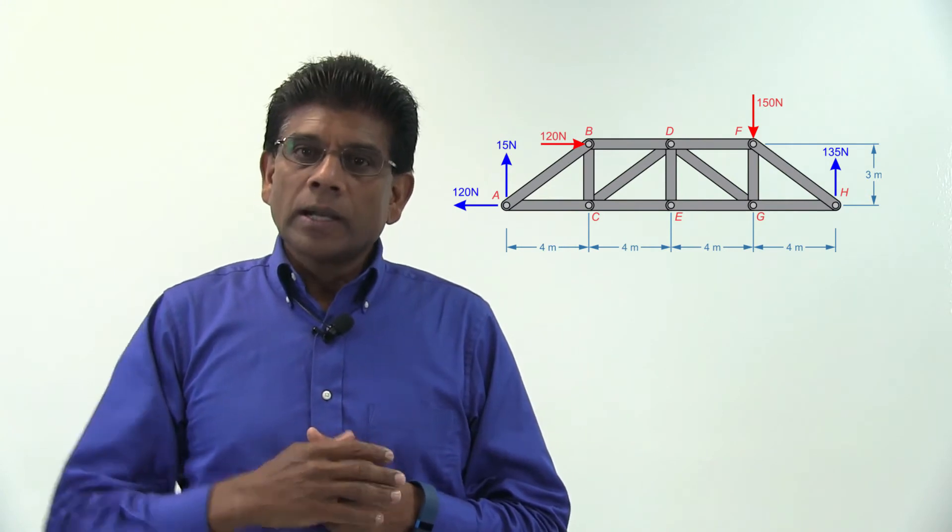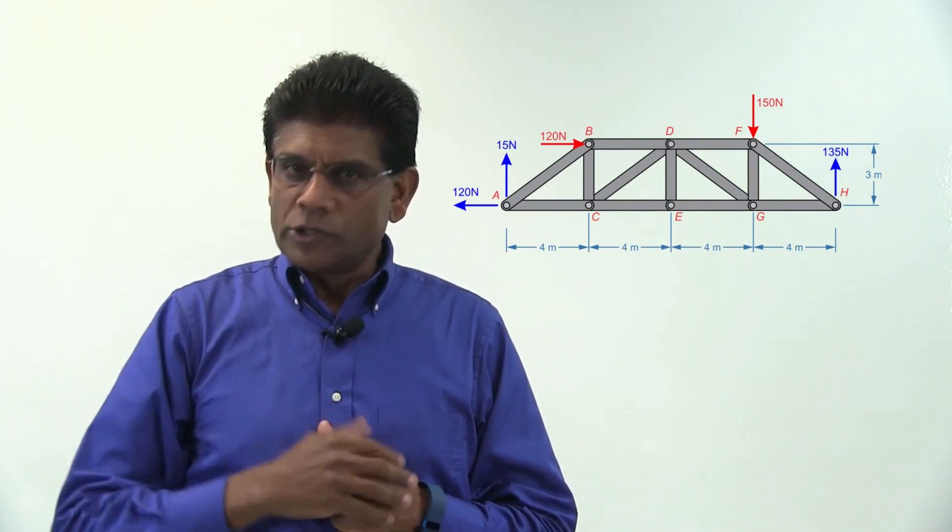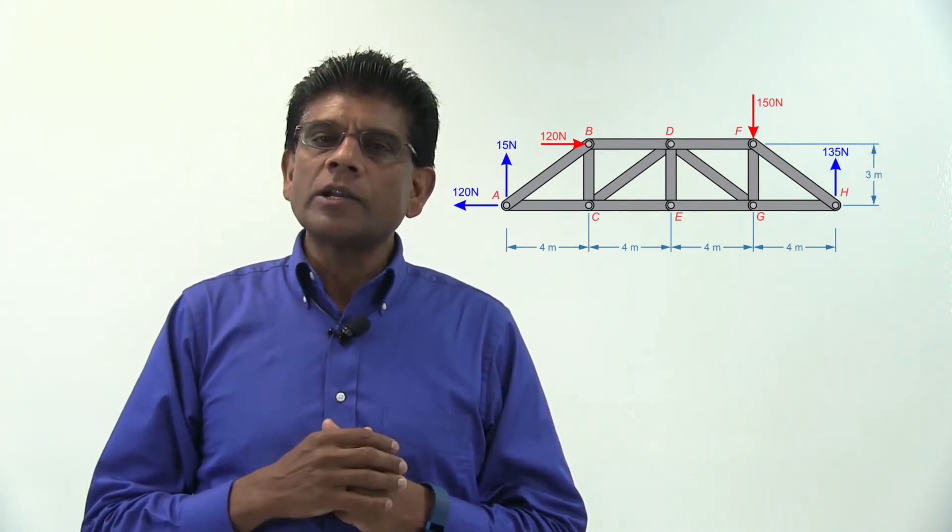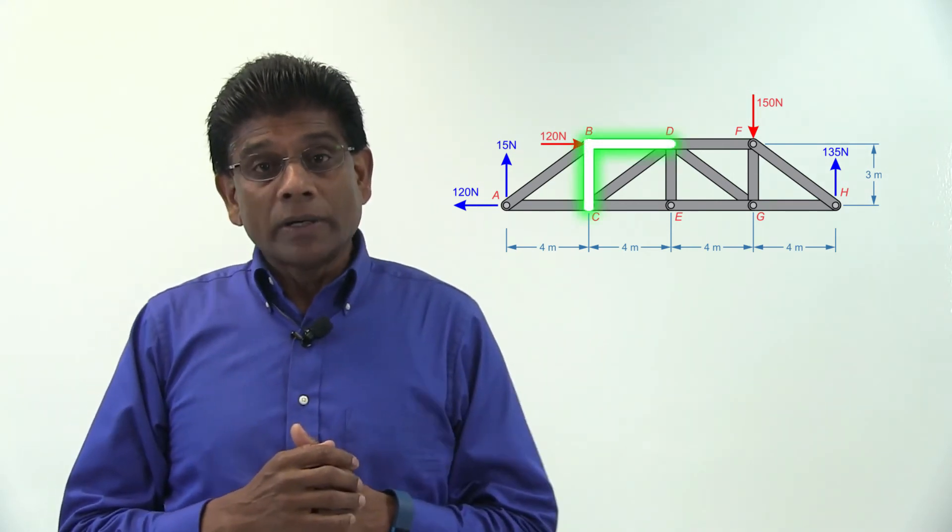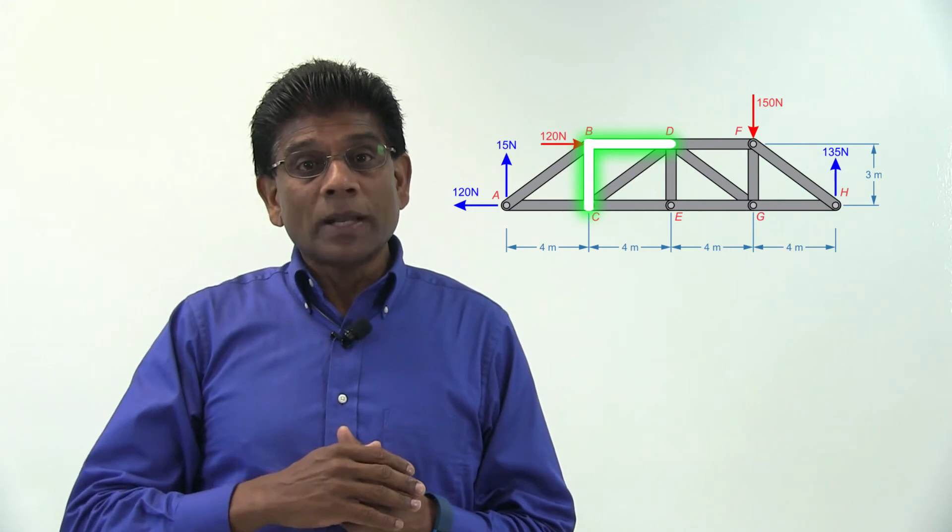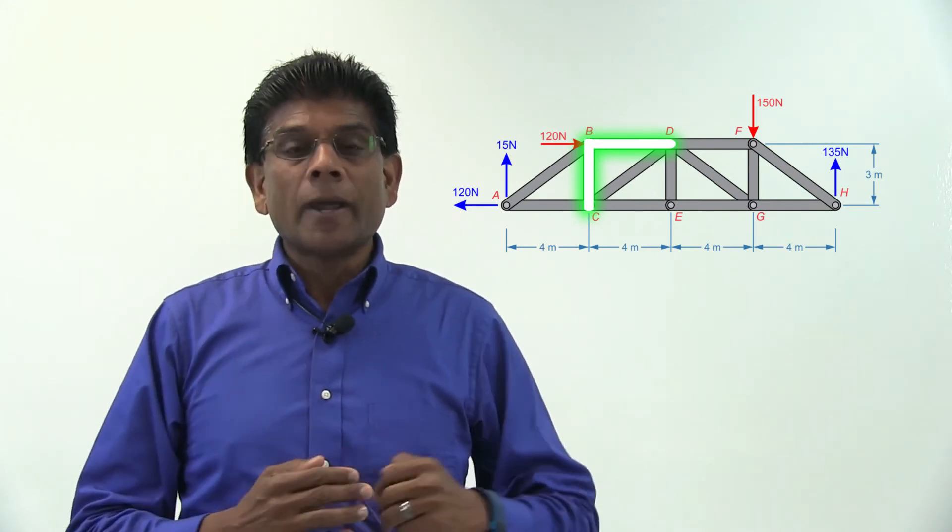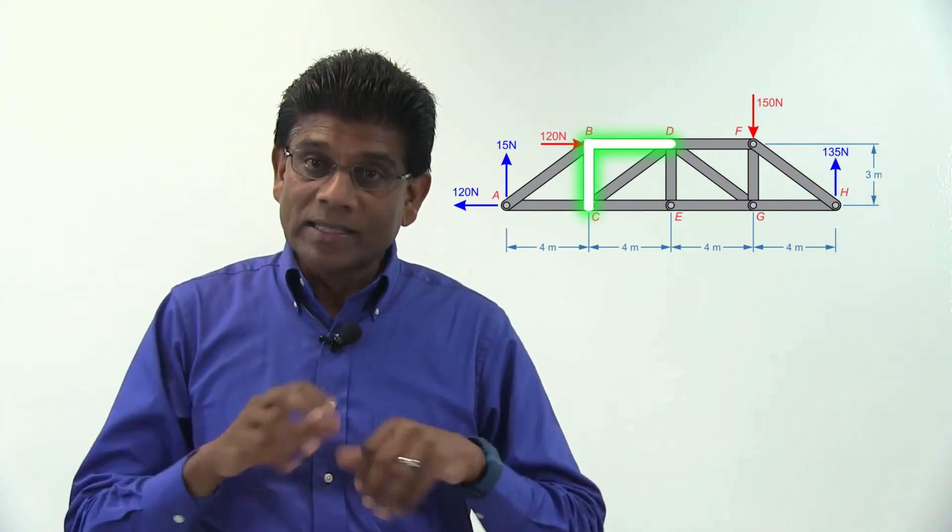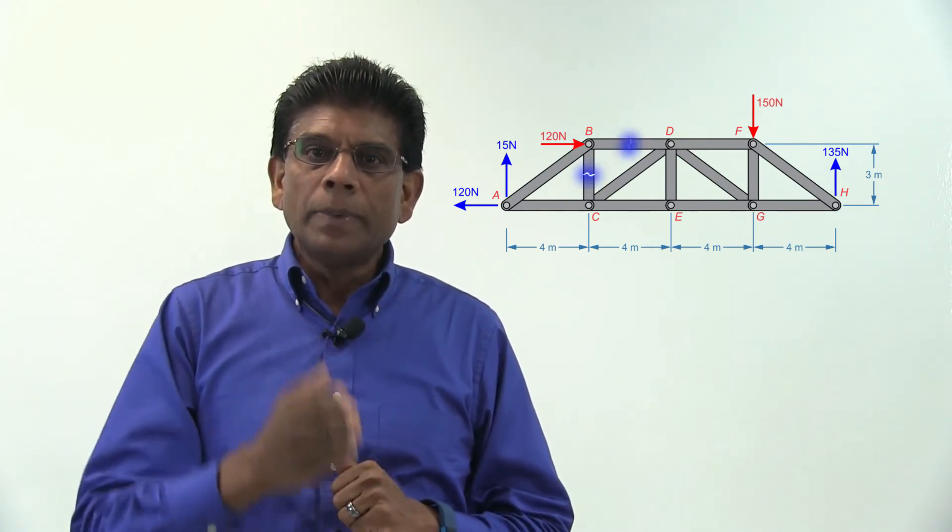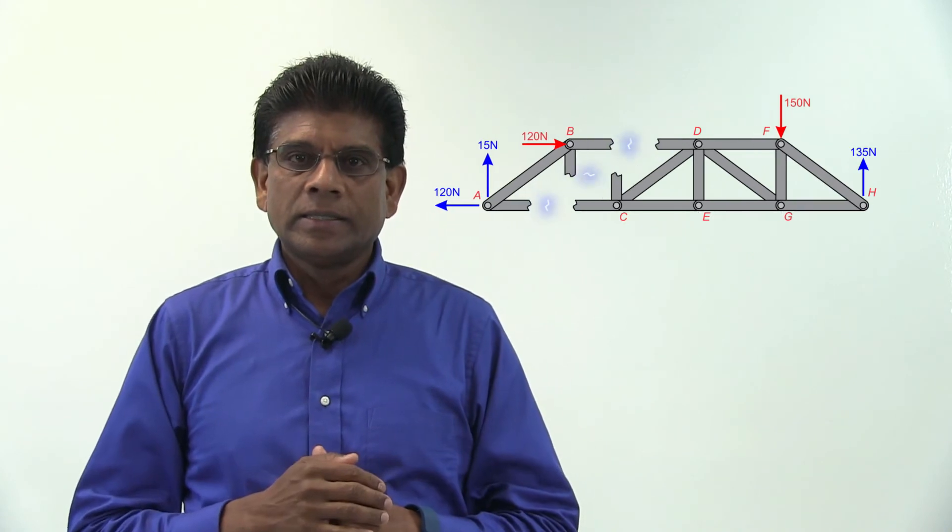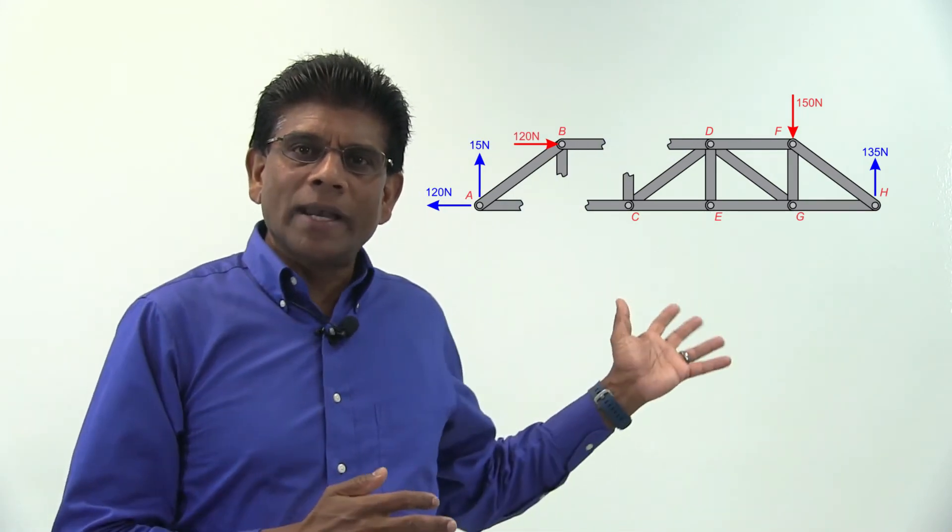Now, cut the structure through the members of interest. In our case, we are interested in members BD and BC. However, we can't actually split the structure into two sections by cutting through two members in this case. So, I am going to cut through three members, BC, BD, and AC. Take a look at what happened now.